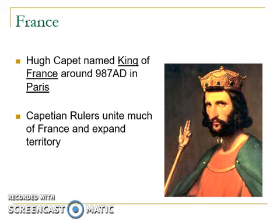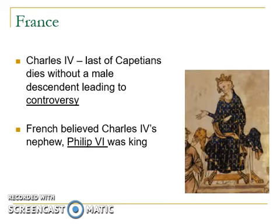Hugh Capet was named King of France around 987 AD in Paris, and the Capetian rulers united much of France and expanded territory — not just Hugh Capet, but also his family who ruled following him. Charles IV, the fourth, was the last of the Capetians, or descendants of Hugh Capet, and he died without a male descendant, leading to controversy over who should rule.